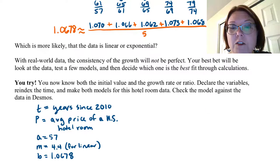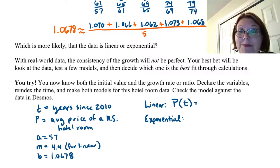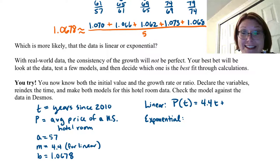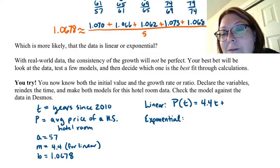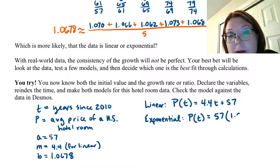Let's go ahead and write our two models. We're going to have one model if this is linear, and one model if this is exponential. A linear model would be capital P of t equals, and then it's usually y equals mx plus b. So in this case, that would be 4.4t plus, it's not the B that's the growth factor, it's the B that's the initial value, the y-intercept, and that's 57 in this case. For the exponential, it's going to be P of t equals my initial value, 57, times (1.0678) to the t power.